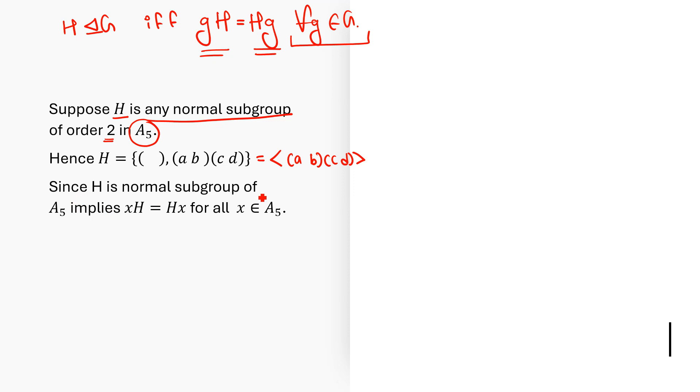Since H is a normal subgroup of A5, XH must be the same as HX for all X inside A5. I will consider (ABC) inside A5. Suppose (AB)(CD) is (12)(34), then (ABC) is the 3-cycle (123). Now let me find out what is XH.